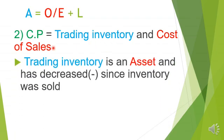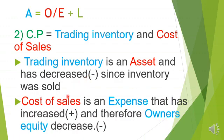For the cost price: Trading Inventory is an asset, and when we sell trading stock it decreases — so assets decrease. Cost of Sales is an expense, and expense falls under Owner's Equity. There is a negative relationship between expense and Owner's Equity, so when expense increases, Owner's Equity decreases.